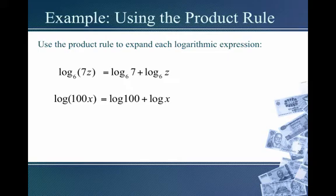The multiplication becomes a sum of logs. And how can we simplify log of 100? Well, 100 is 10 squared, so the base of 10 in the log cancels with the 10 in the base of the exponent, and we just get the power to fall out. So our final answer is 2 plus log x.